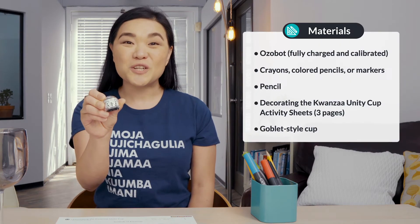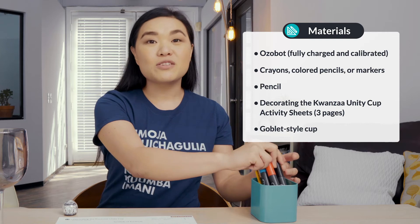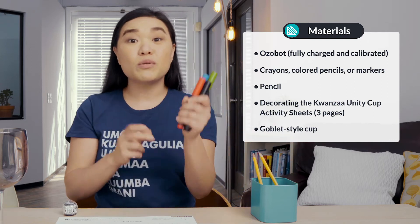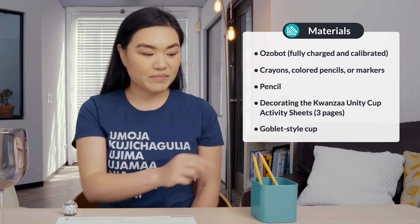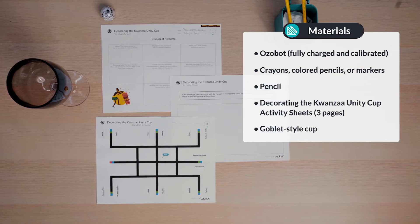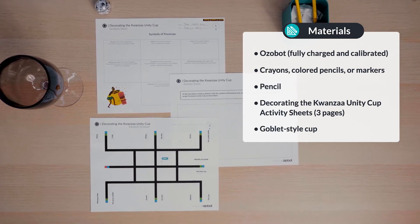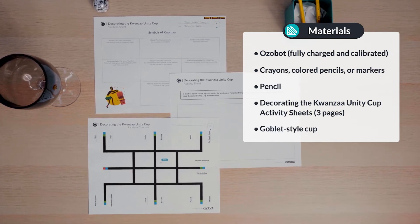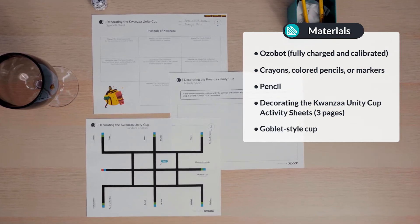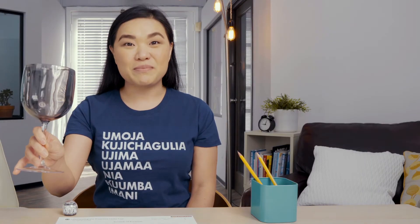For today's lesson you will need an Ozobot fully charged and calibrated, colored pencils, crayons, or markers, a pencil, the Decorating the Kwanzaa Unity Cup activity sheets — make sure to have all three pages — and a goblet style cup.